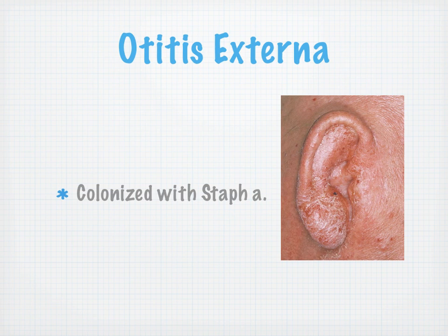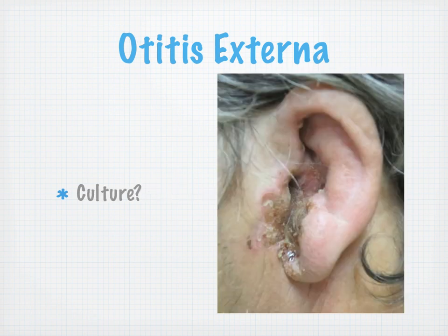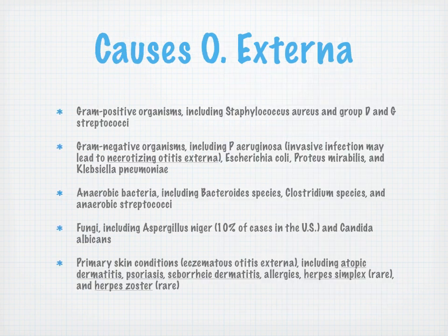Otitis externa. That one's colonized with Staph aureus. The next slide is also externa — it asks if you'd like to culture that. So what are the causes of otitis externa? We have gram-positive, gram-negative, anaerobic, and fungi. I want to stop briefly on Aspergillus niger — that accounts for 10% of all cases in the U.S. — and also Candida albicans. Don't discount the role of fungal friends in otitis externa. Also primary skin conditions including atopic dermatitis, psoriasis, seborrheic derm, allergies, herpes simplex, and shingles.